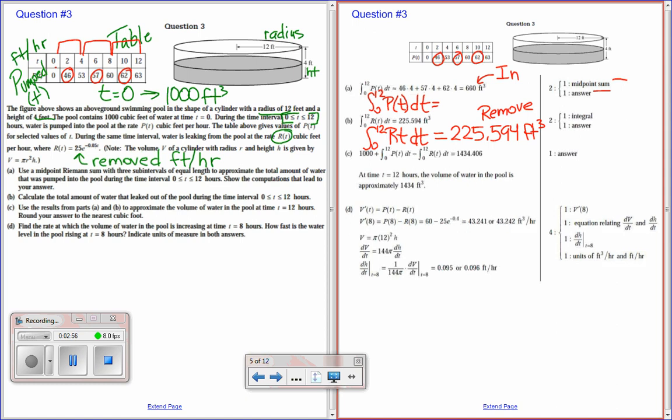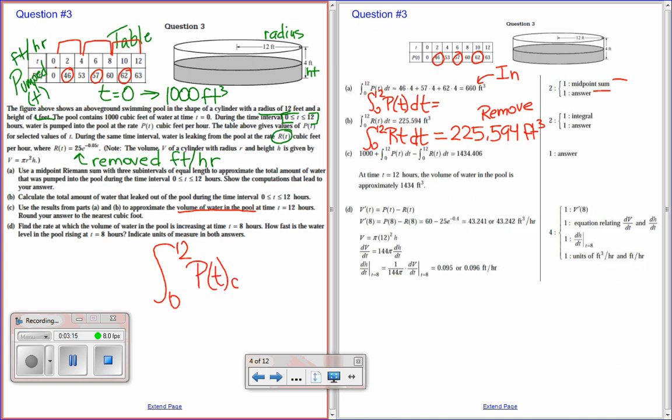Part C: use the results from part A and B to approximate the volume of water in the pool at the time T equals 12 hours. So the amount of water in the pool at 12 hours. In order to do that, we're going to take the amount pumped in minus the amount removed. But then we have to remember that we started off with 1,000 cubic feet of water in the pool. So this is what we started with. This is what we added. And then this is what we took out. Now, some of these values we've already figured out, right? Because we already know that this is 660, and then we already know that this is 225.594.